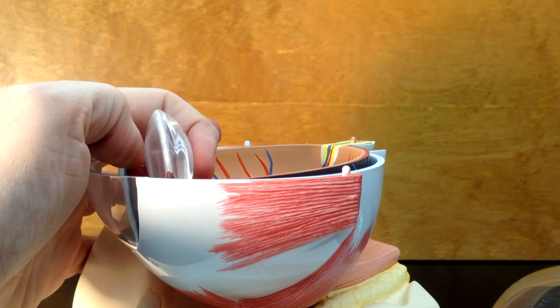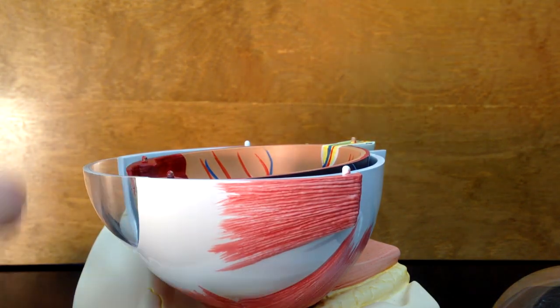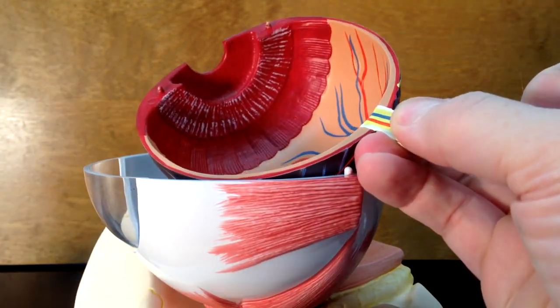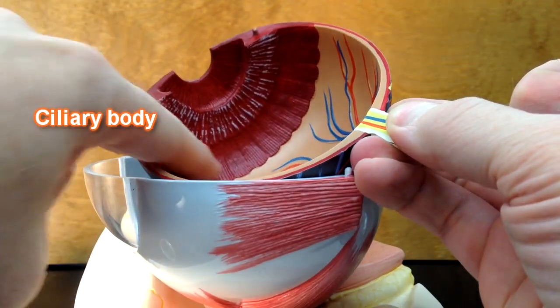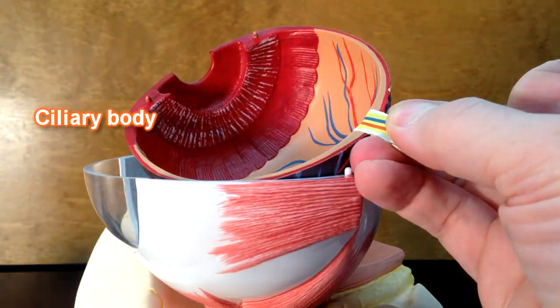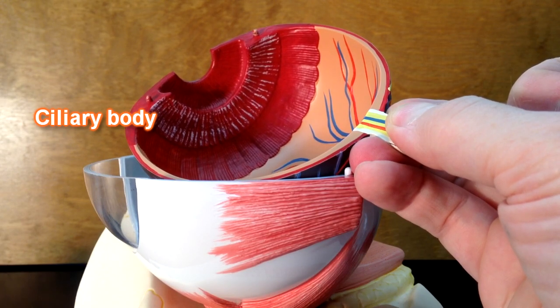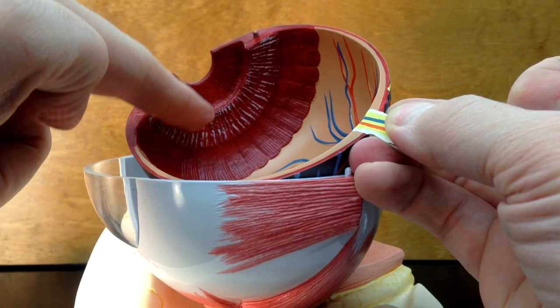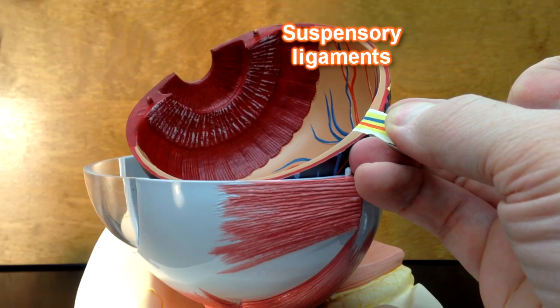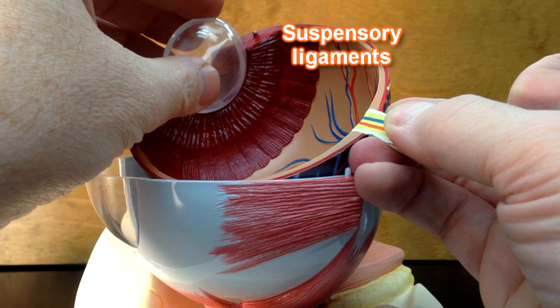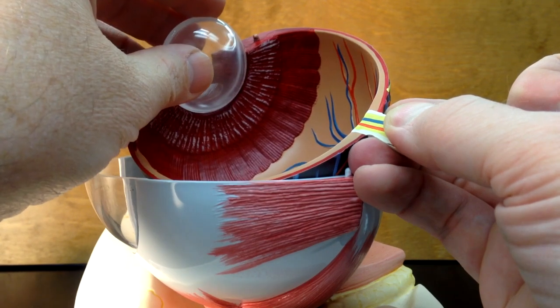This lens is suspended from the ciliary body, which we can see in here as being this red portion here. Those are ciliary muscles that will constrict and dilate to change the shape of the lens.